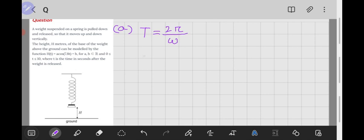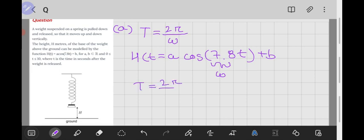And we know from our equation h(t) equals a times cos(7.8t) plus b, that our angular frequency is given by the constant in front of our time value. So then we can say our period is equal to 2π divided by 7.8. After computing this value, our period is approximately 0.805 seconds.